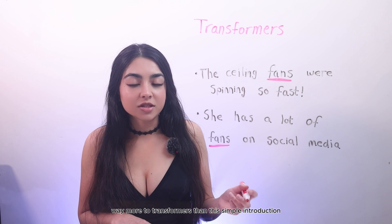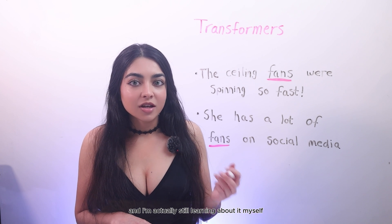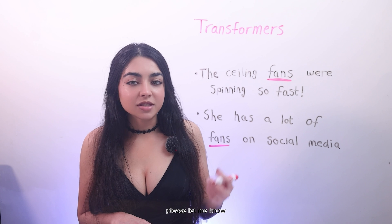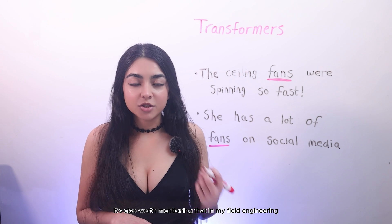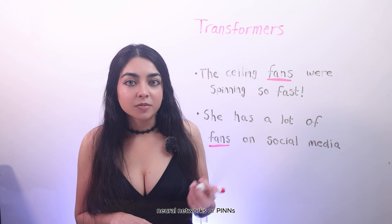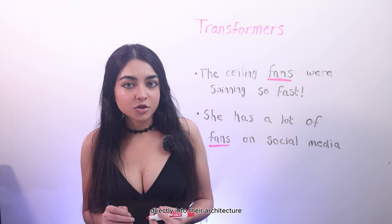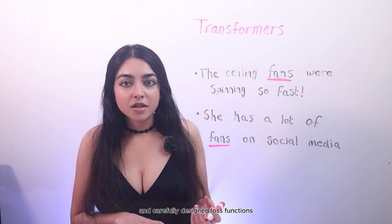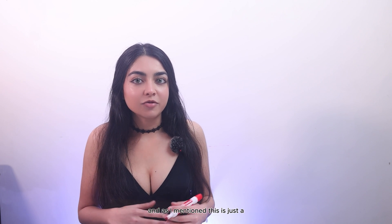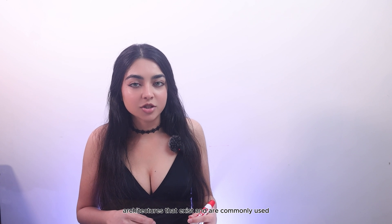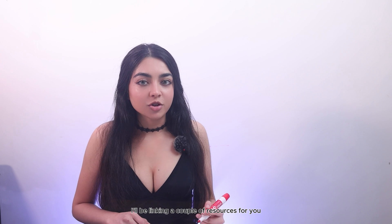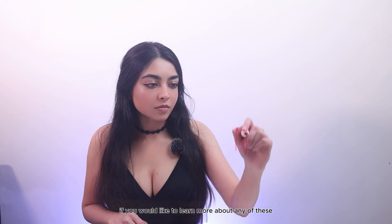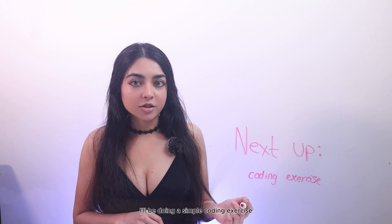There's obviously much more to transformers than this simple introduction, and I'm still learning about it myself. It's also worth mentioning that in my field, engineering, there is a growing demand for physics-informed neural networks, or PINNs, which integrate physics-based principles directly into their architecture and training process, embedding prior knowledge of physical systems through carefully designed loss functions that enforce adherence to physical laws. This has been a general overview of some of the different neural network architectures. I'll be linking resources in the description, and in the next video, I'll be doing a simple coding exercise demonstrating neural networks in action, focusing on feedforward and convolutional neural network architectures.